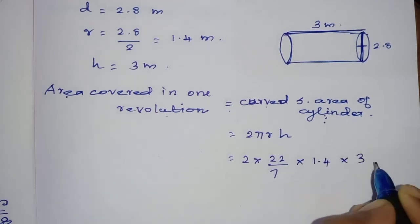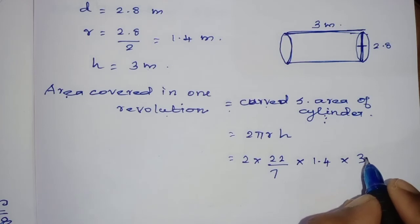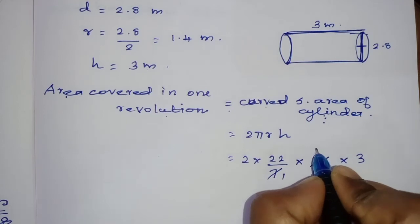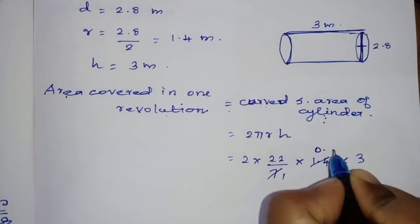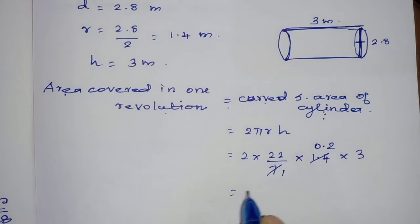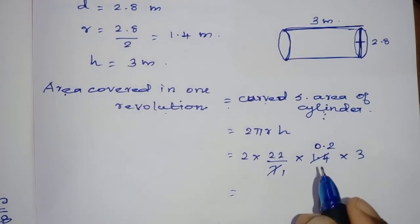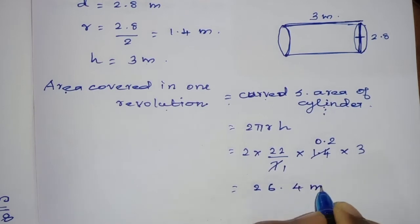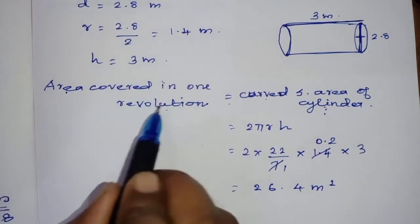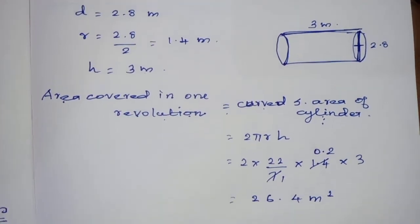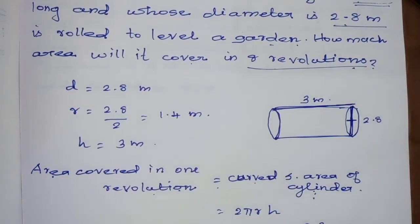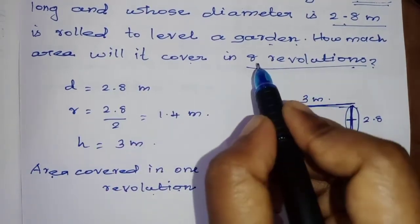Cancel, then multiply. The answer is 26.4 meters square. This is the area covered in 1 revolution.